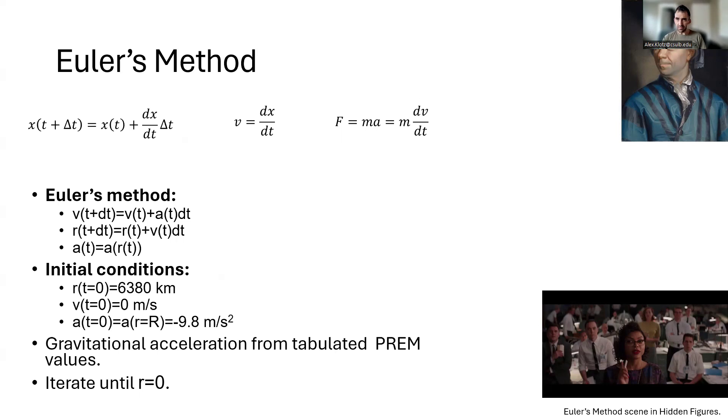So if I know acceleration based on looking it up in a table of PREM values, I can figure out how velocity changes, and I can figure out how position changes. So set up an algorithm where we start at the surface, increment our velocity by the acceleration, increment our position by the velocity, find what the new acceleration is, and then repeat until our radius equals zero, figure out how long it takes.